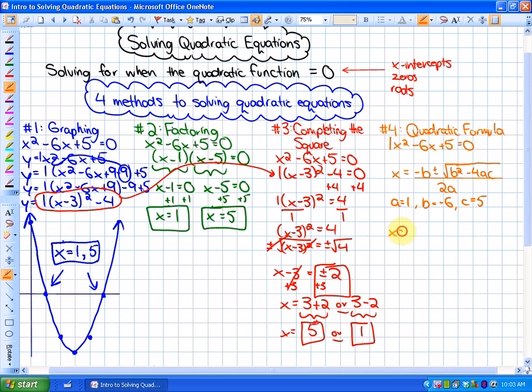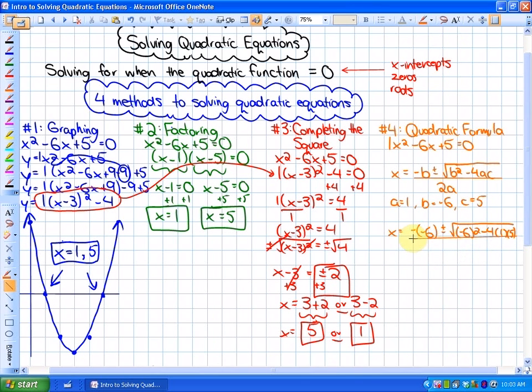Leaving us with x is equal to negative negative 6 plus or minus the square root of negative 6 squared minus 4 times 1 times 5 all over a denominator of 2 times 1. As I simplify this, I get 6 plus or minus the square root of 36 minus 20 all over a denominator of 2. So it's x equals 6 plus or minus the square root of 16 all over 2. Which is x is equal to 6 plus or minus 4 over 2.